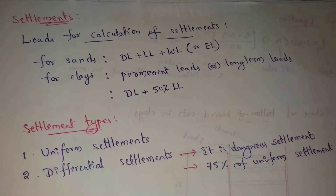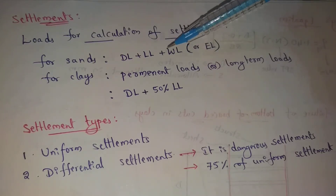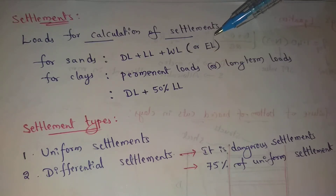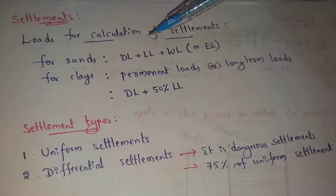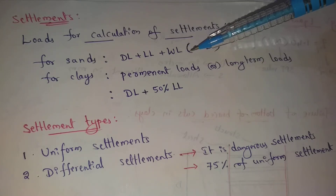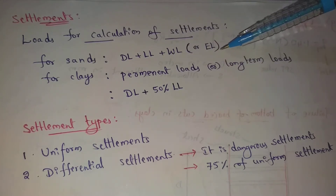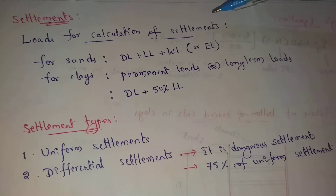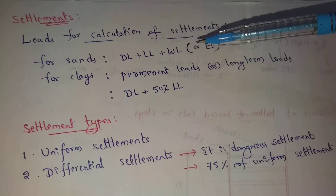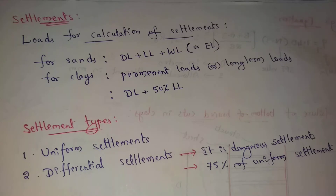Next topic: settlement, soil settlements. Some intensity of loading application automatically causes settlements. Here, settlements are caused by dead loads, live loads, wind loads, and earthquake loads. For sand, dead load and live load plus wind load are considered. After applying loads for calculation of settlements, these permanent loads are long-term loads.